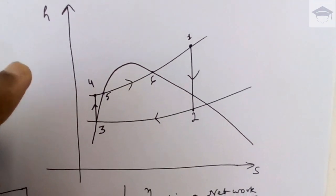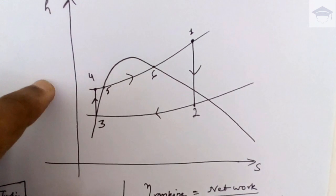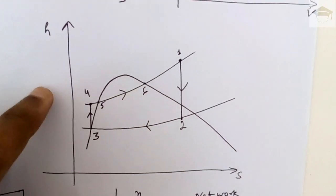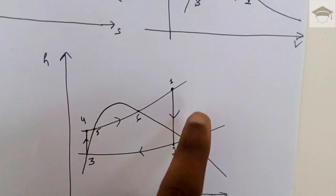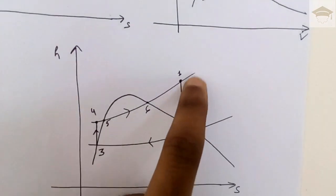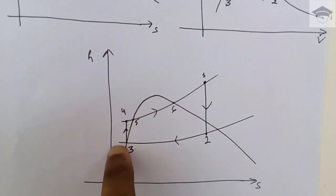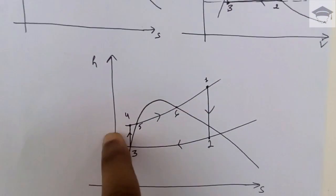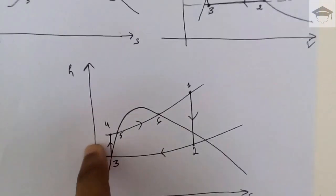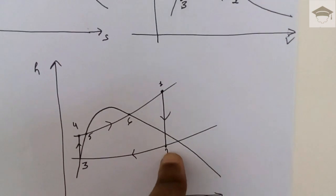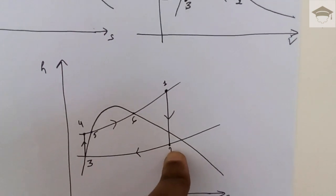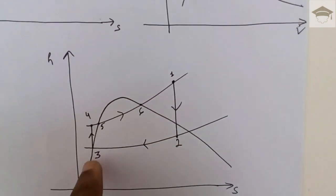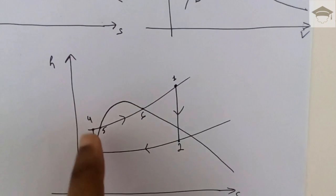On the HS diagram: from one to two we get work output from the turbine; from two to three heat is rejected in the condenser; from three to four work is supplied in the pump; and from four to one heat is added in the boiler at constant pressure along the constant pressure lines.